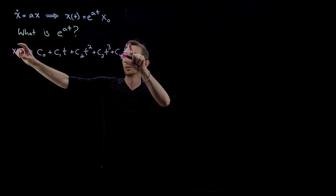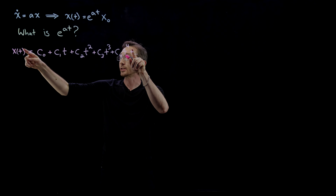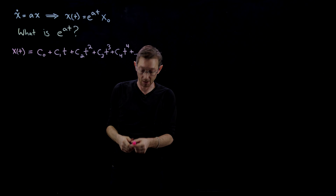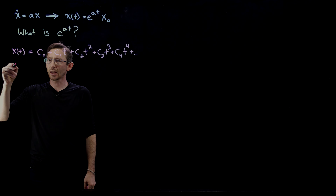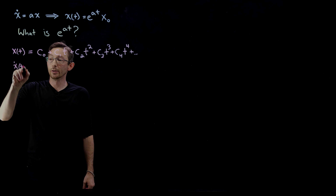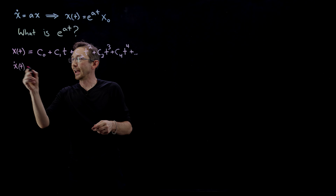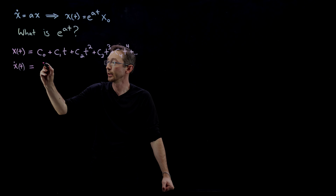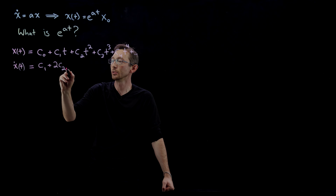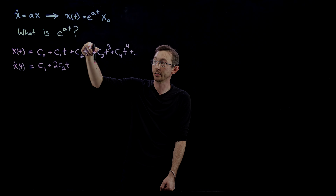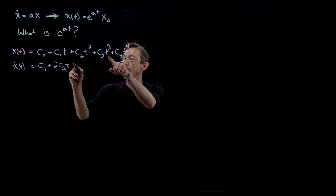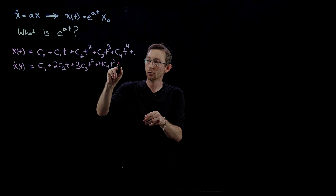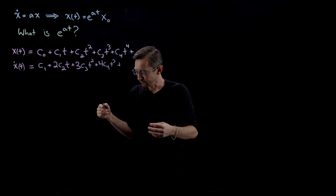We're going to take this expansion, compute its derivative x_dot, multiply x by a, and set those two expressions equal to each other, then solve for what all the coefficients must equal to satisfy the differential equation. Taking x_dot — the derivative of x with respect to time — the c_0 constant term goes to zero, giving: x_dot = c_1 + 2c_2*t + 3c_3*t² + 4c_4*t³ + ⋯